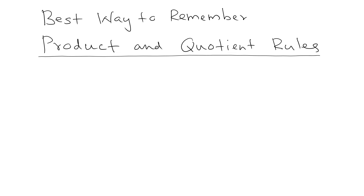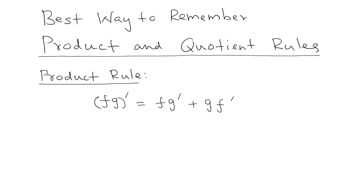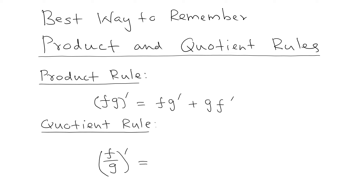you have probably seen this formula. For the product rule, we remember it in prime notation like this: (fg)' = fg' + gf'. And for the quotient rule, you're going to see something like this: (f/g)' = (gf' − fg') / g².